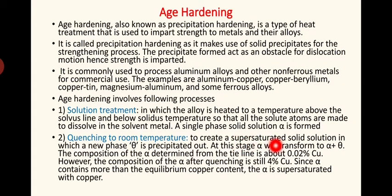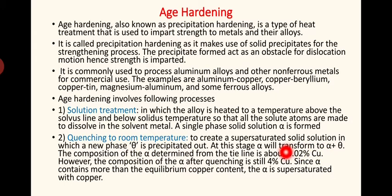With quenching, a supersaturated solid solution is created. The composition of the alpha after quenching is still 4% Cu, even though equilibrium would give only about 0.02% Cu. Since alpha contains more than the equilibrium copper content, it is called supersaturated alpha with copper. The more the copper content, the greater the possibility of theta phase precipitating out, which is why we aim for the supersaturated condition.